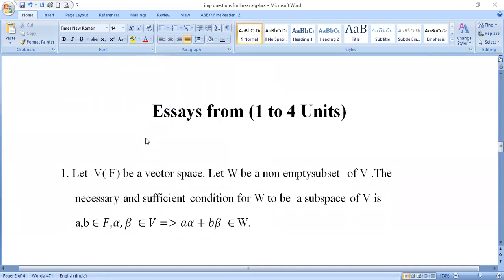Now for essay questions. First: Let V(F) be a vector space and W be a non-empty subset of V. The necessary and sufficient condition for W to be a subspace of V is: for all α, β ∈ F and vectors in W, we have Aα + Bβ also belongs to W. This is a very important question that appears frequently in exam papers, so prepare this question well.